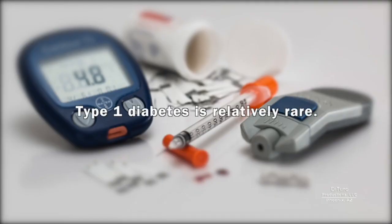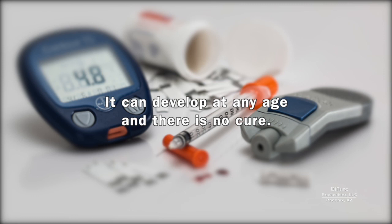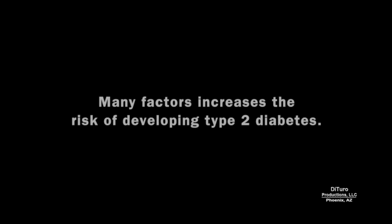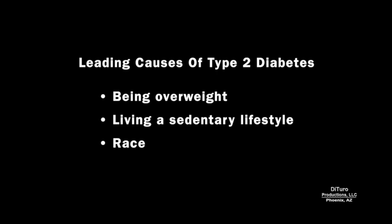Type 1 diabetes is relatively rare — according to the CDC, between 5 to 10% of diabetics are type 1. It can develop at any age and there is no cure. Until the late 20th century, type 2 diabetes was also rare. Common risk factors include being overweight or obese, being age 45 or older, a family history of diabetes, race, high blood pressure, low HDL cholesterol, high triglycerides, a sedentary lifestyle, and a history of heart disease or stroke. In most cases, the leading causes are being overweight, living a sedentary lifestyle, and race.